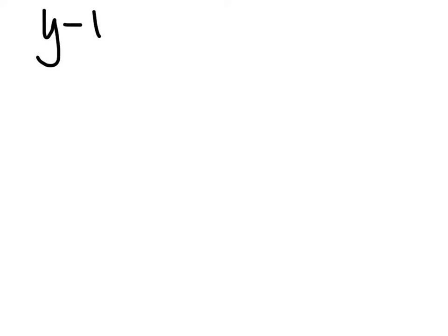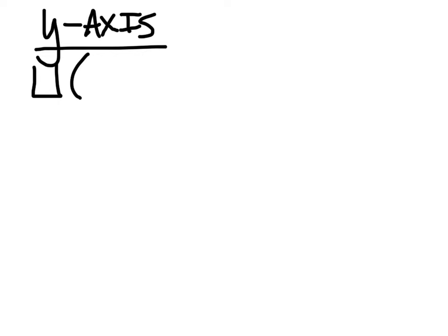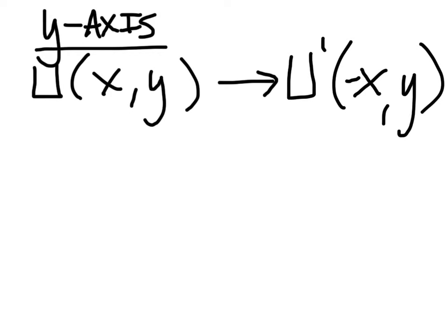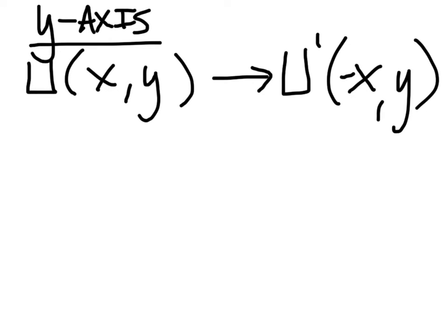What about reflections over the y-axis? If we have a point U with values x and y — these can be any values, both positive or negative, rational, irrational, even pi — if we transform this by reflecting it over the y-axis, it gives us U prime. Remember, if we change it over the x-axis, the y value became its opposite. When we change it over the y-axis, the x value becomes its opposite, and then the y value remains the same.